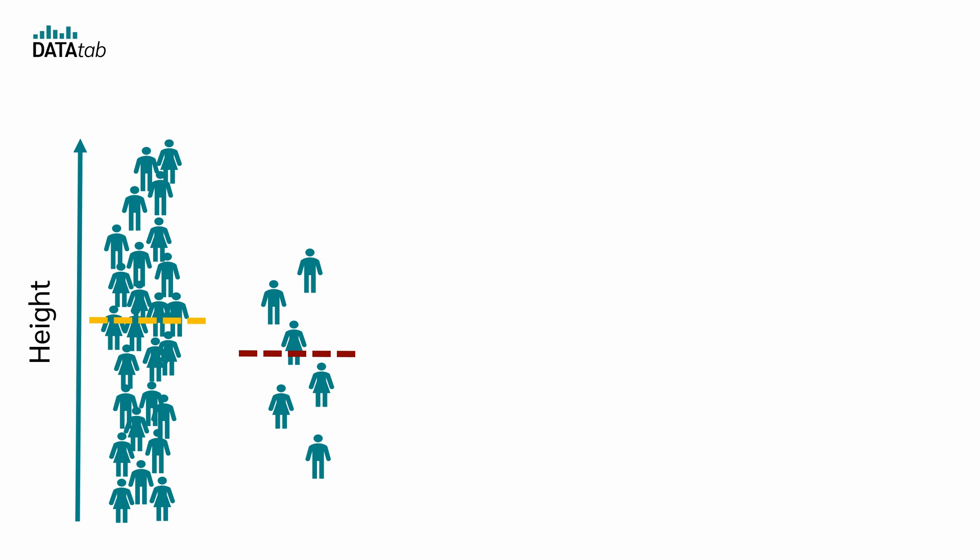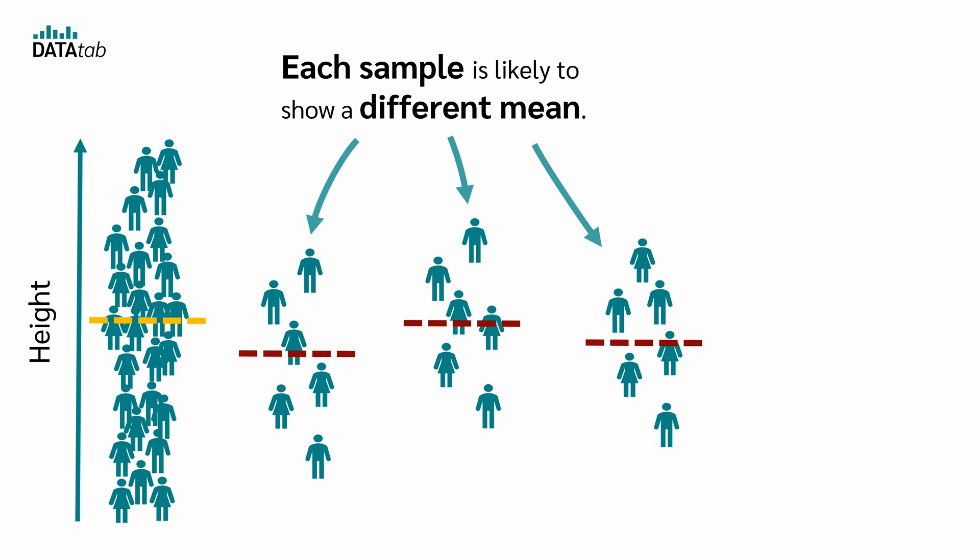Let's assume that we draw not just one, but several samples, which of course you don't actually do in practice. Each sample is likely to show a different mean. So, in the first sample we have one mean, in the second sample we most likely have another mean, and again in another sample we have another mean. Of course, it is also possible that, purely by chance, two or more samples have means that are exactly the same, but this is very unlikely.